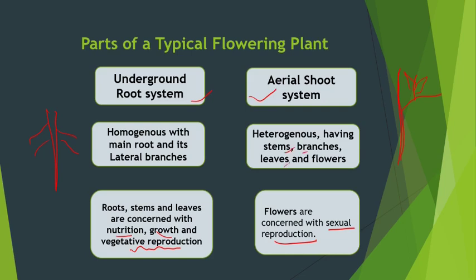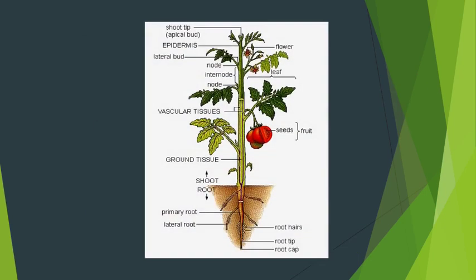The root system is basically homogenous — its branches are similar. The root, the stem, and the leaves are concerned with vegetative reproduction, whereas the flowers are concerned with sexual reproduction. You can see the same in this picture: this is the root system, the aerial part is the shoot system, comprising branches, the leaves, the flowers, and the fruits.